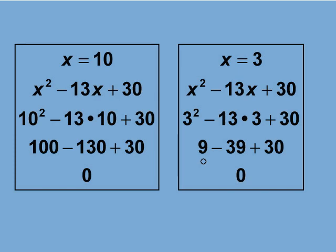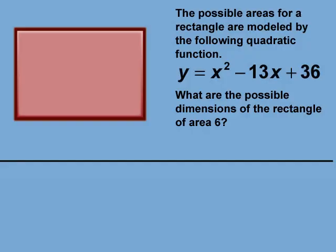Let's look at a final example which builds on what we just solved. The possible areas for a rectangle are modeled by the following quadratic function: y equals x squared minus 13x plus 36. What are the possible dimensions of the rectangle of area 6?